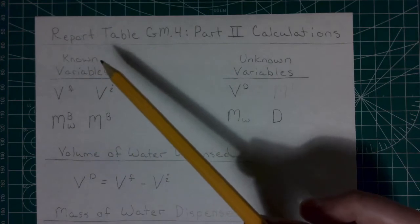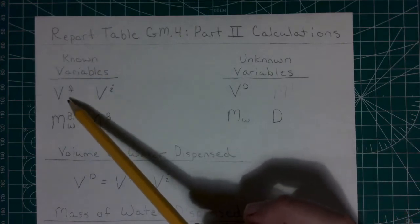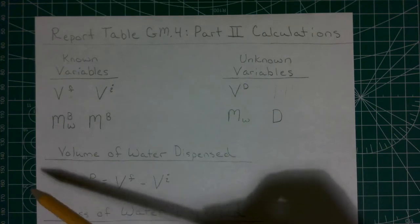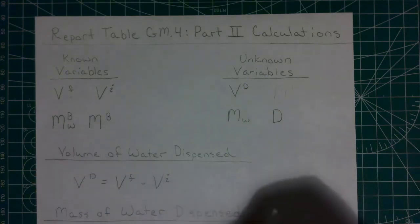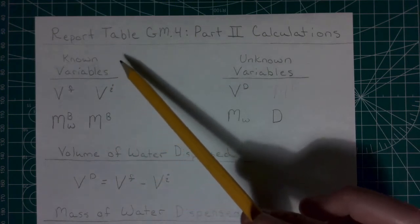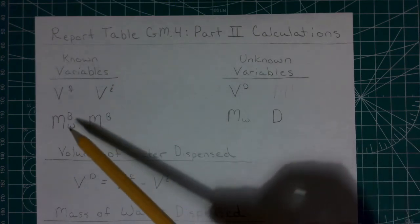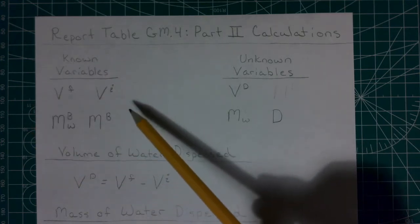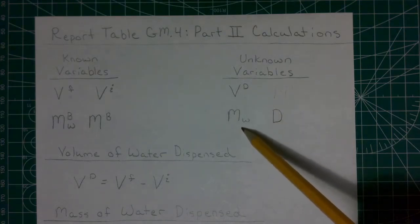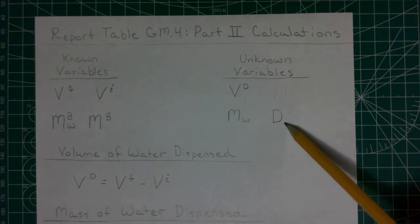In this table, our known variables are going to be the final volume measurement that we took from a burette, the initial volume that was in that burette, the mass of the beaker and the water, and the mass of the beaker. So we drained water from a burette down into a beaker, and these are the measurements that we took. And what we need to know is what is the volume of water that we delivered, what is the mass of that water, and then finally what is going to be the density of that water.